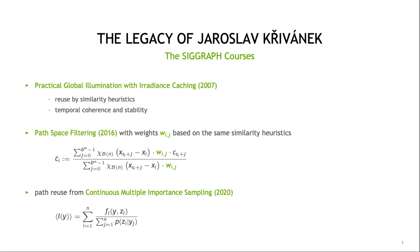Instead of a weighted average, the contributions of n light transport paths are shared in a query camera path y by combining the contribution of each light path segment c_i, divided by the sum of the probabilities of having generated the light path segment given that its camera path segment would have been y_j.